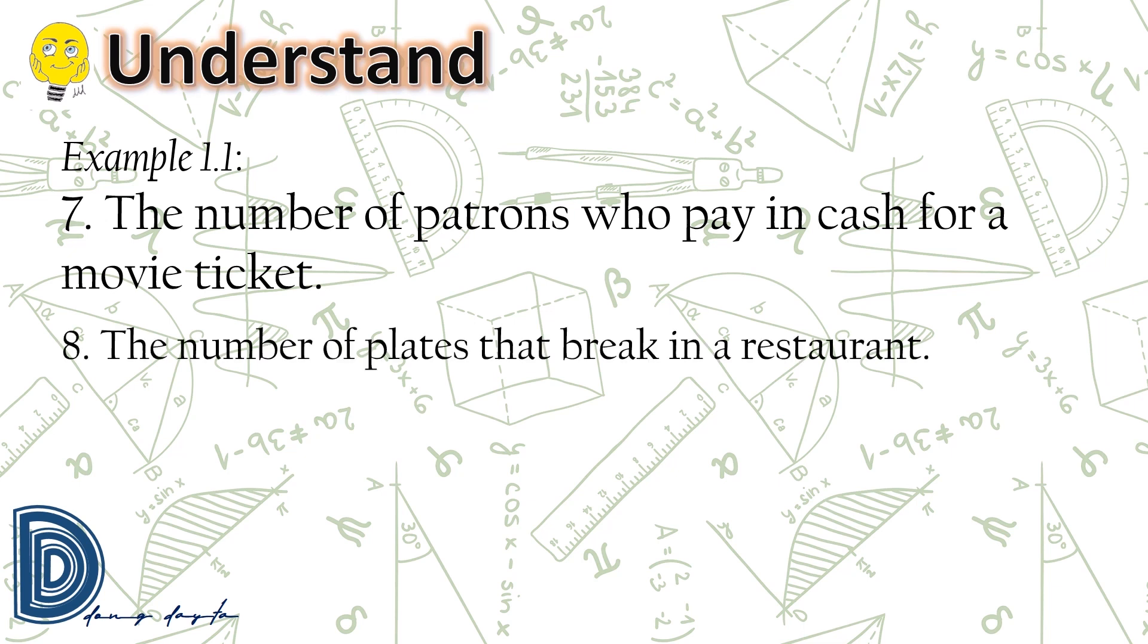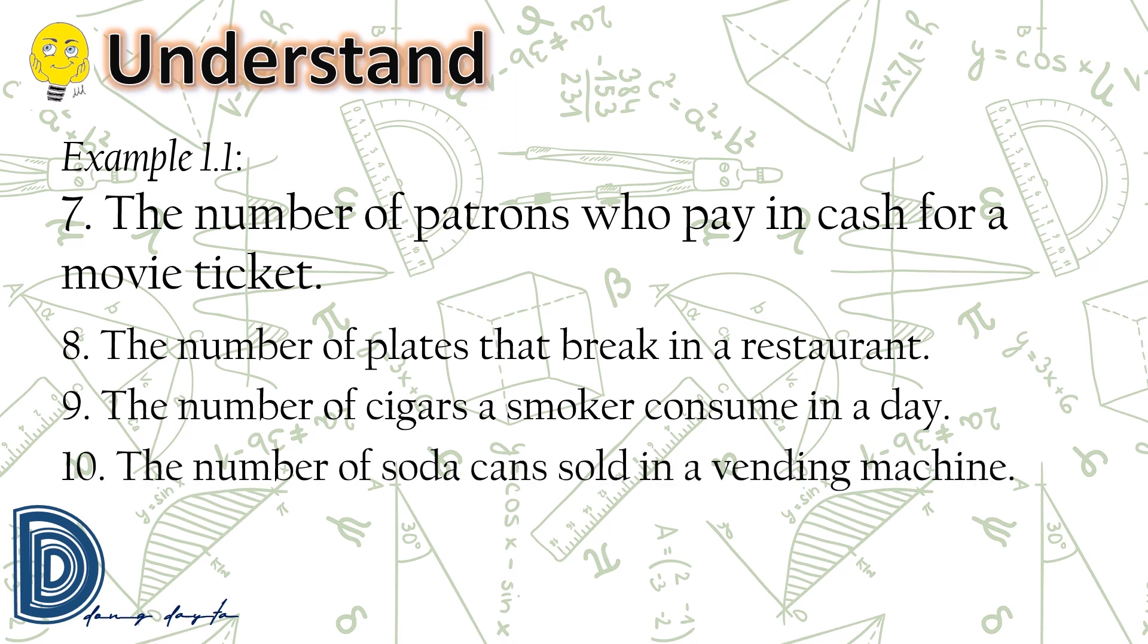The number of plates that break in a restaurant is a discrete random variable. The number of cigars a smoker consumed in a day. The number of soda cans sold in a vending machine. So those are discrete random variables.